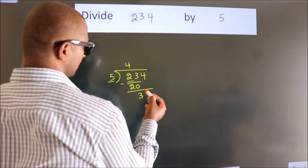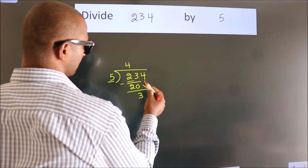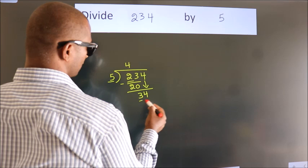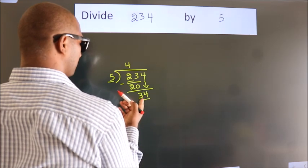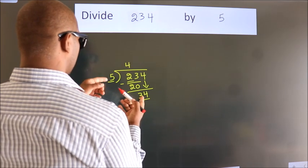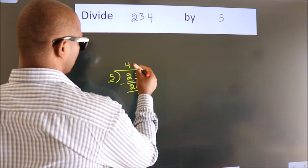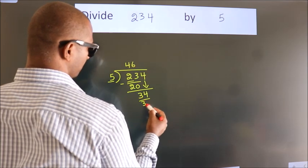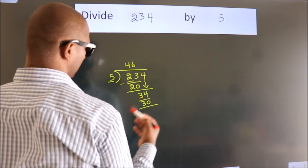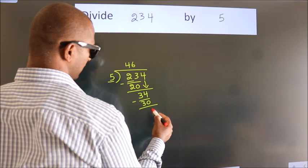After this, bring down the next number. So 4 down. So 34. A number close to 34 in the 5 table is 5 times 6, 30. Now we subtract, we get 4.